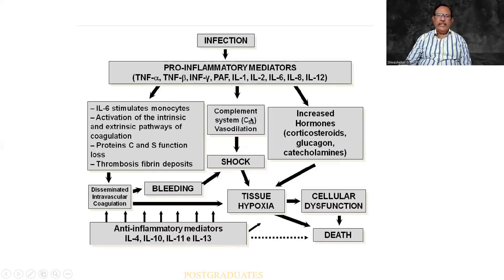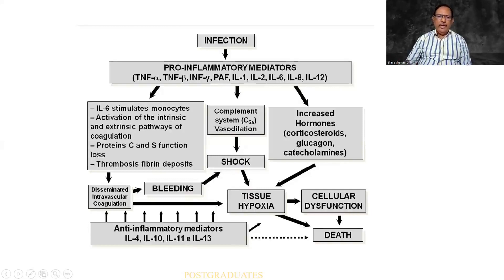On the other hand, there can be activation of the complement system, vasodilatation, C3a, C5a — all leading to shock. Also, there can be increased hormones such as corticosteroids, glucagon, and catecholamines, all leading to tissue hypoxia. After thrombosis, there can be disseminated intravascular coagulation, otherwise called consumption coagulopathy, resulting in bleeding — again leading to shock and tissue hypoxia. Anti-inflammatory mediators will be the other interleukins. Ultimately, they promote tissue hypoxia which can lead to death.